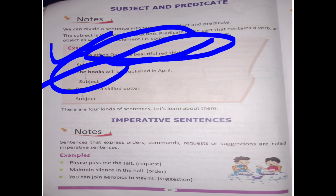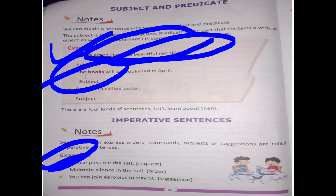There are four kinds of sentences. First is the imperative sentence. Sentences that express orders, commands, requests, or suggestions are called imperative sentences. For example: 'Please pass me the salt' — this is a request because 'please' is used. 'Maintain silence in the hall' — this is an order. 'You can join aerobics to stay fit' — this is a suggestion.